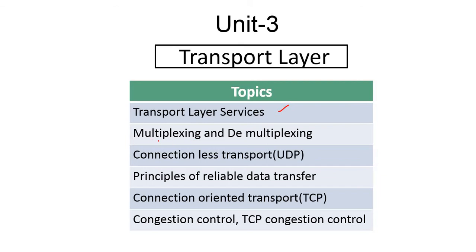We will discuss multiplexing and demultiplexing. We will discuss two protocols: connectionless transport, which we will achieve through UDP - User Datagram Protocol - as well as connection-oriented transport by the help of TCP - Transmission Control Protocol. We will also discuss the principle of reliable data transfer, how data transfers from source end to destination end. After understanding data transfer, we will look at congestion control and TCP congestion control.